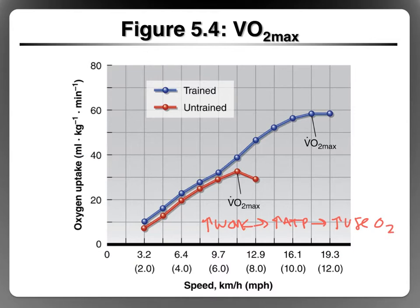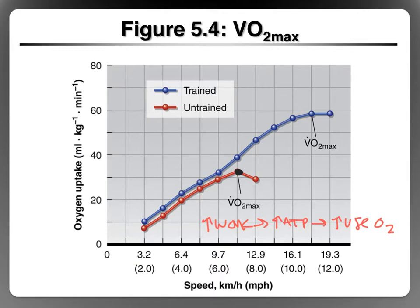As intensity increases and we do more work and need more ATP, the uptake of oxygen is increasing. The red line is an individual who hasn't trained yet. As the treadmill got faster, they increased work, increased ATP need, and increased oxygen use, and it continued to increase until they got to about 7 miles per hour. At 7 miles an hour, they hit a VO2max. When the treadmill sped up to 8 miles an hour, the VO2max dropped. That point would be defined as the individual's VO2max — the highest amount of oxygen that individual was able to consume per minute. After that, it's either going to plateau or it's going to drop.